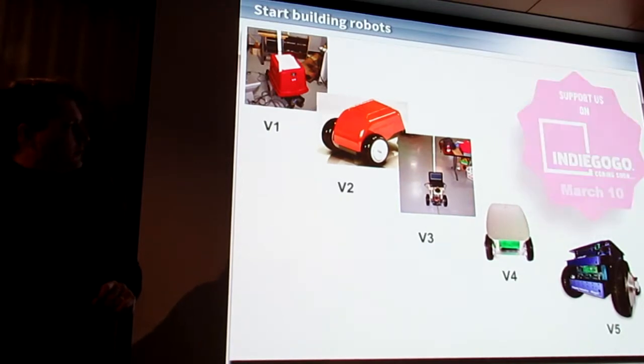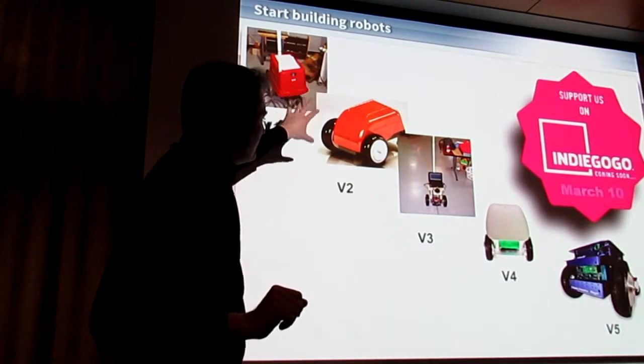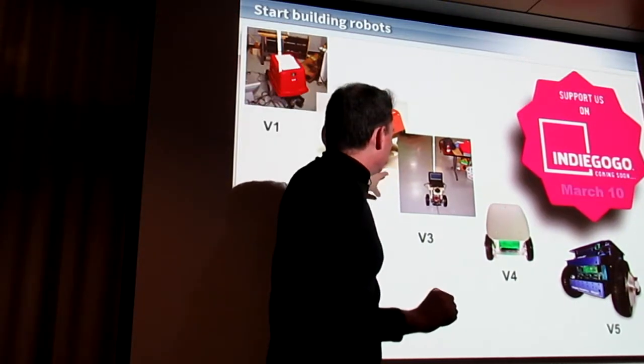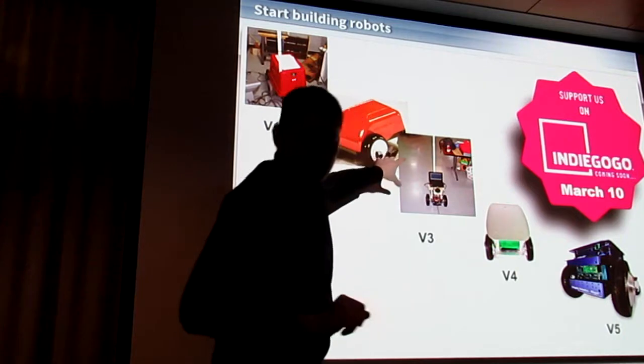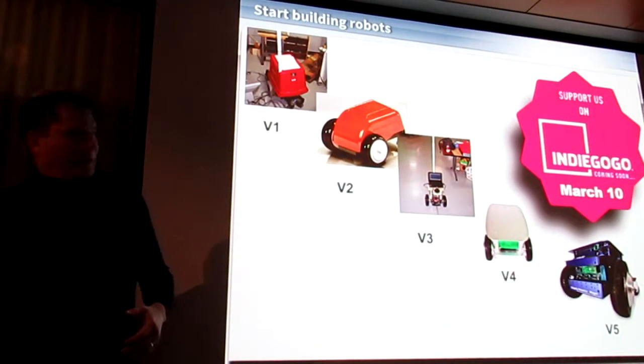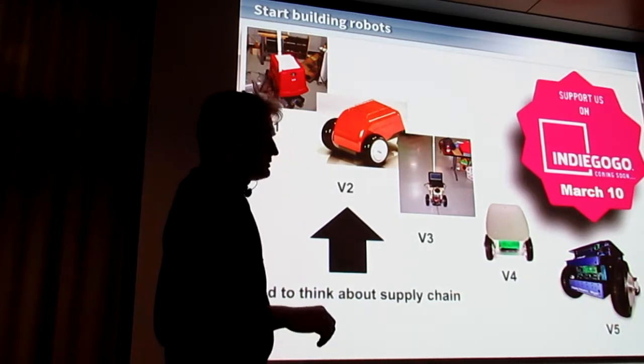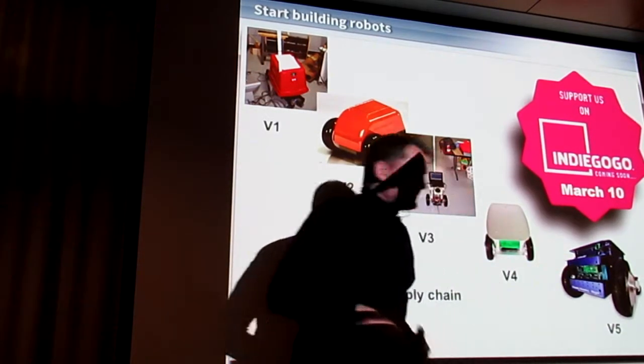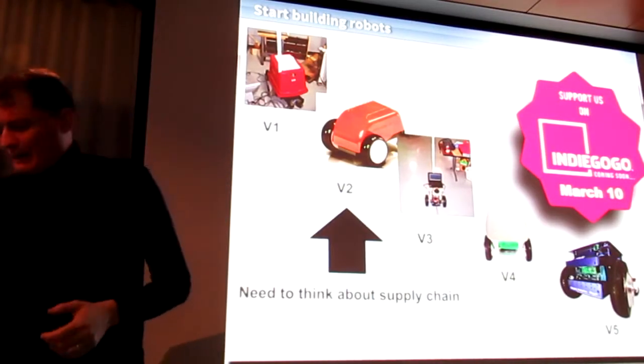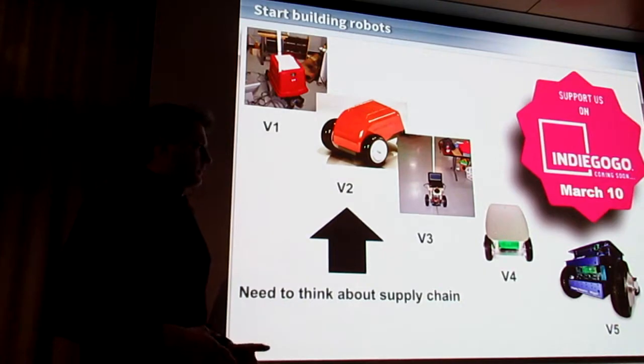The problem though with some of these things was really that they weren't manufacturable. We had to start to think about supply chain. Here I was just buying components. But as we go through here, you need to think a little bit more about some of the things that can go wrong when you're not just producing one robot, you're producing several.